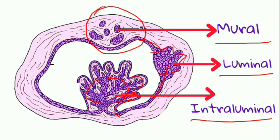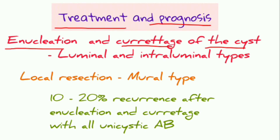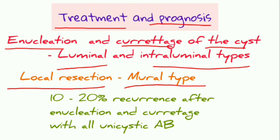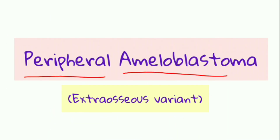Treatment of unicystic ameloblastoma includes enucleation and curettage of the cyst, commonly done for luminal and intraluminal types. Mural type requires local resection. A 10 to 20% recurrence rate can be seen after enucleation and curettage in all types of unicystic ameloblastoma.